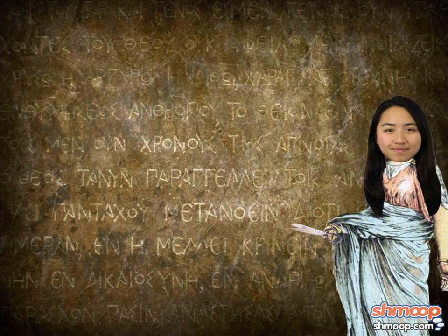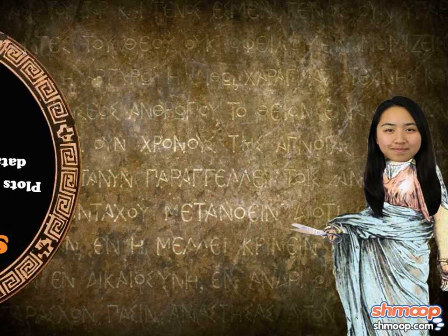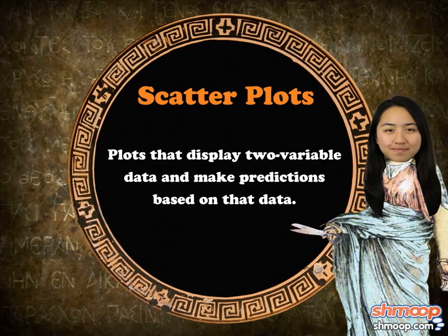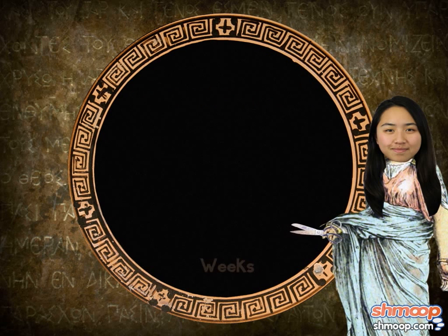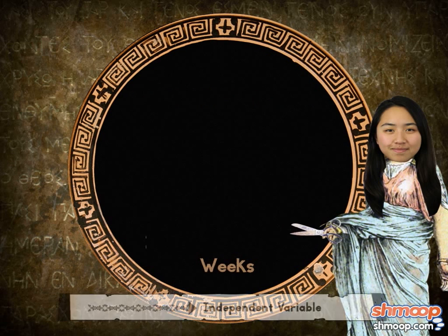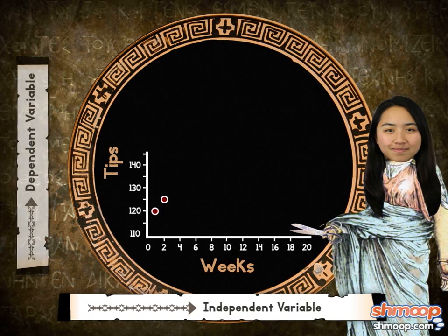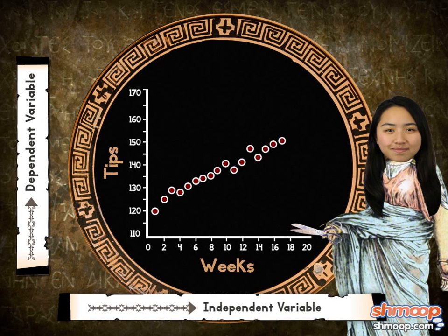To see when she'll be able to buy the gloves, Shaina tracks her tips in a scatter plot to see if there's a trend. Scatter plots display two-variable data, and make predictions based on that data. Shaina makes weeks her independent variable — the variable that isn't influenced by anything — and her tips are the dependent variable.